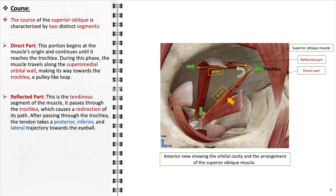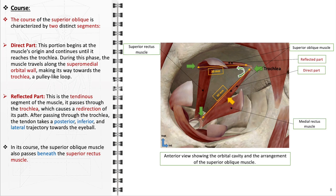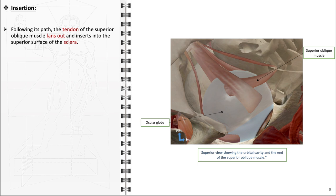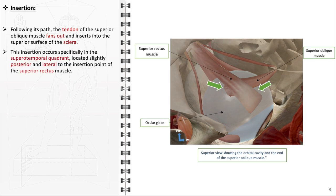The reflected part of the superior oblique is primarily tendinous and crucial for the muscle's function. Upon reaching the trochlea, the muscular body transforms into a tendon approximately 20 mm in length. The tendon passes through the trochlea, causing a significant change in direction, adopting a posterior, inferior, and lateral path towards its insertion point on the eyeball. The superior oblique muscle passes beneath the superior rectus muscle. After coursing through the trochlea, the tendon fans out and attaches to the superior surface of the sclera within the superotemporal quadrant — slightly posterior and lateral compared to the insertion of the superior rectus muscle.